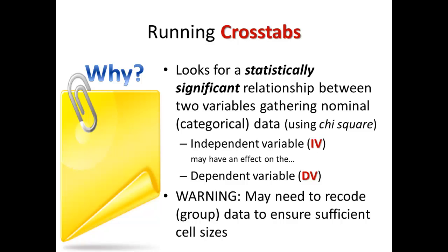Note that you may need to recode or group data to ensure sufficient cell sizes. If you have a small survey sample, you might not have enough in, for example, the 18-to-24-year-old age group to run a cross-tabulation that will identify statistically significant differences. The number of people in that cell might be too small for a valid test, so you might have to recode it — that is, combine it with another category. For example, you might combine the 18-to-24 age group with the 25-to-34 age group, creating a new category called 18-to-34.